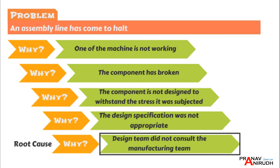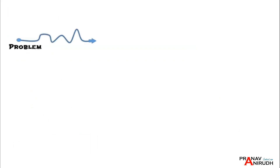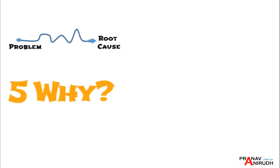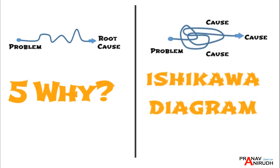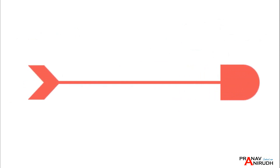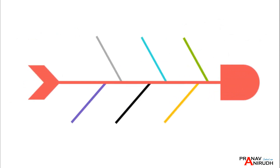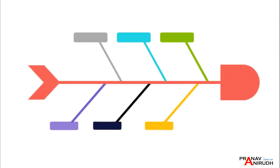This is how we can address the root cause of a problem using Why-Why analysis. For simple problems with a straightforward root cause, the 5-Why technique can be a quick and efficient way to identify the root cause. But if the problem is more complex with multiple potential causes, then the Ishikawa diagram may be a better choice. The Ishikawa diagram provides a visual representation of potential causes and allows for a more comprehensive examination of the problem.